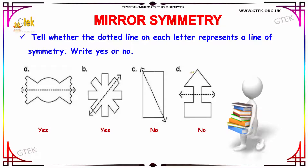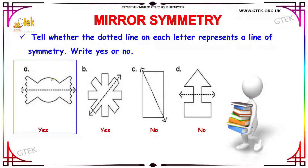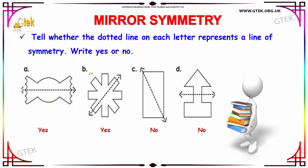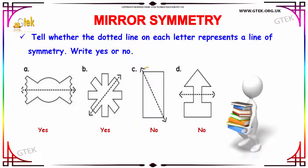We have a question in which we have to tell whether the dotted line on each letter represents a line of symmetry or not. In image A, the line of symmetry divides the image into 2 equal parts, and both images are equal as you can see along the line of symmetry. In option B, the line of symmetry also divides the image into symmetrical shapes. Whereas in options C and D, it does not divide in a symmetrical manner.